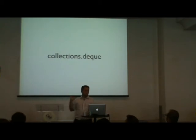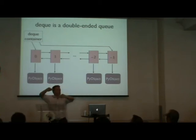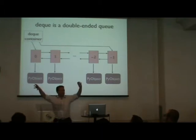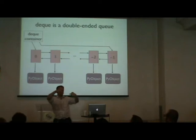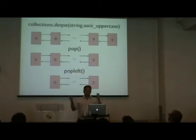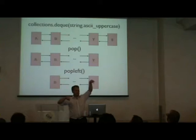The deque class is in the collections module and is implemented as a double-ended queue. There's a Python data structure with pointers to both the beginning and end of the queue, and each element has pointers to the next and previous elements. Accessing position 0 or -1 is very fast since it knows the beginning and end directly. The middle requires traversal, which is slower, but push and pop from either end are true O(1) — not amortized O(1).